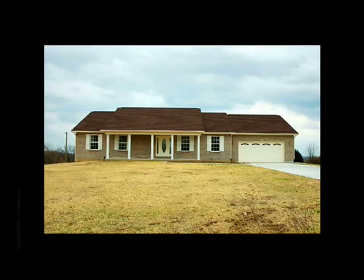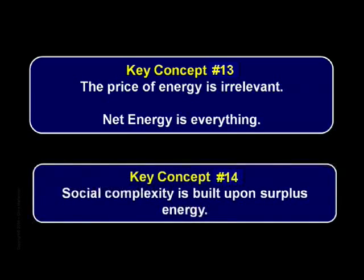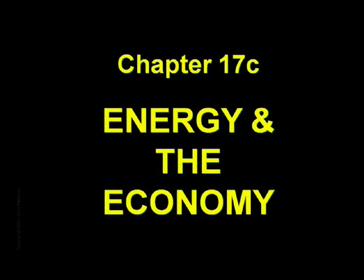So let's review the two key concepts before moving on. Number thirteen: the price of energy is irrelevant — net energy is everything. On this basis, both corn-based ethanol and hydrogen are dismal failures. Key concept number fourteen: social complexity is built upon surplus energy. If we want to maintain our society in its current form, we're going to have to master this concept, and fast. Now on to Chapter 17c, Energy and the Economy. Thank you for listening.